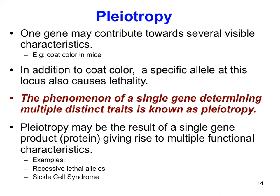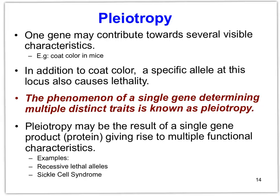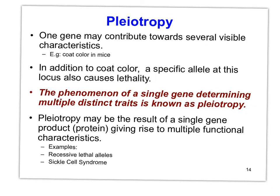Pleiotropy — what is that? It's essentially when one gene contributes to several characteristics. One of the most famous examples is coat color in mice, where in addition to coat color, one of the alleles also causes death. So those are the two phenotypes: the color of the fur, and death. One protein product, multiple functions.